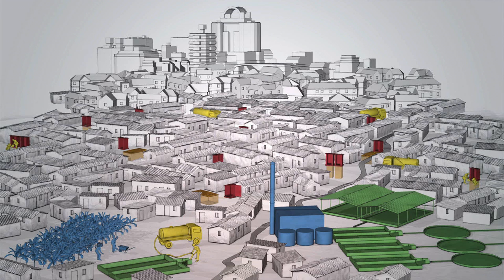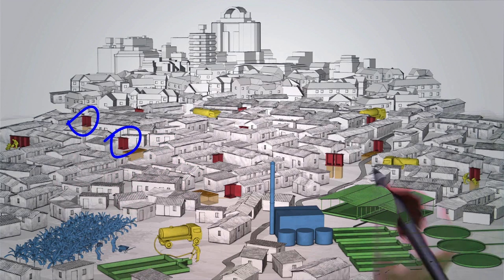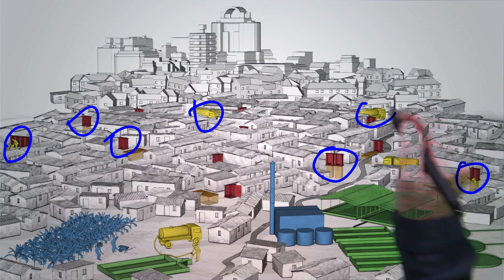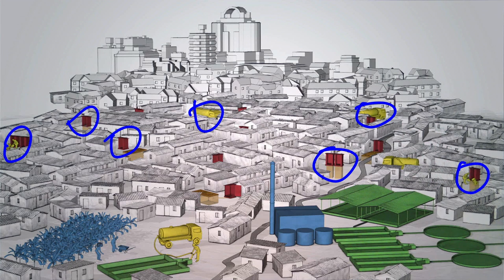Problems in the service chain include households that cannot afford to pay someone to empty their system, so they are forced to find alternative solutions like digging it out themselves. Manual emptiers, once they've emptied the systems, find it physically impossible to transport sludge long distances. Mechanical emptiers with trucks find the distances too far to transport sludge to treatment facilities, or traffic is simply too bad to reach the treatment facility. There is also a general lack of treatment facilities in most cities, and fecal sludge that is used or disposed of in unhygienic ways.